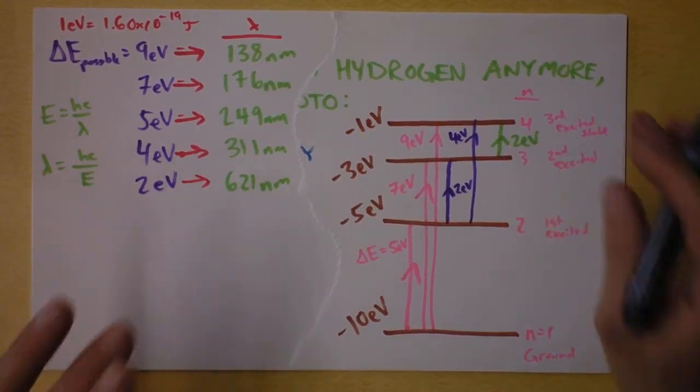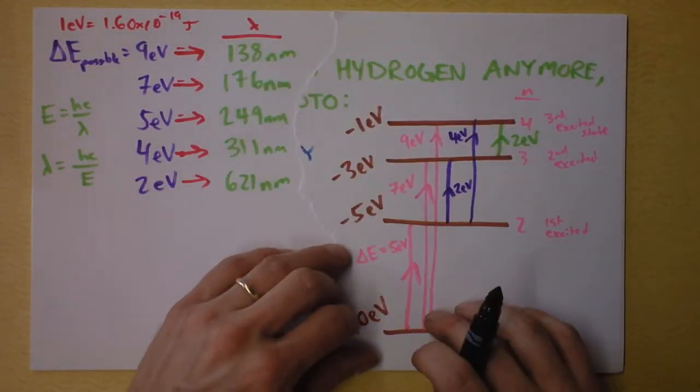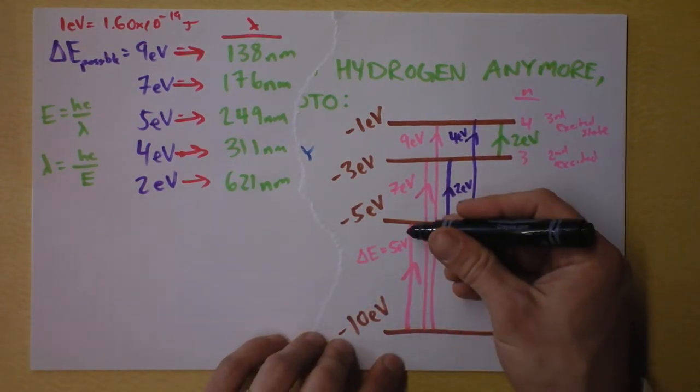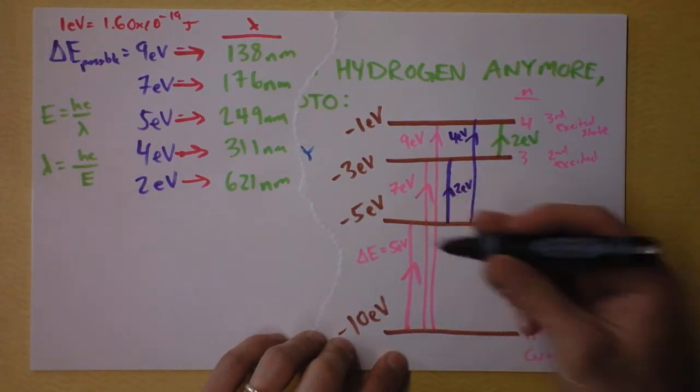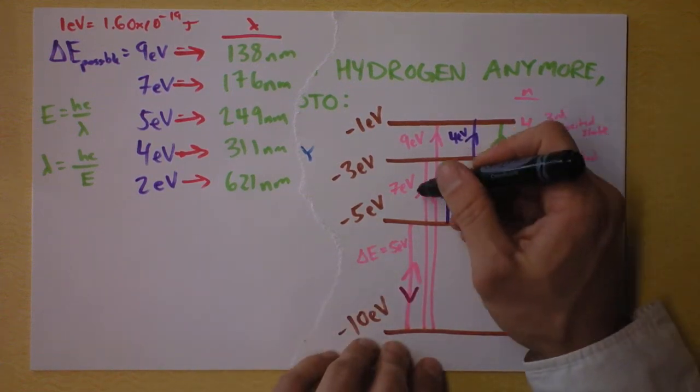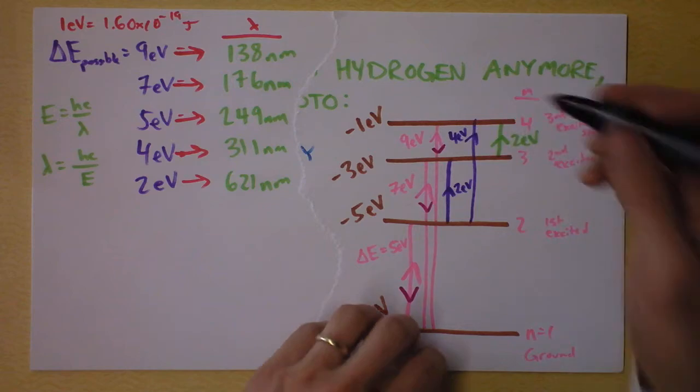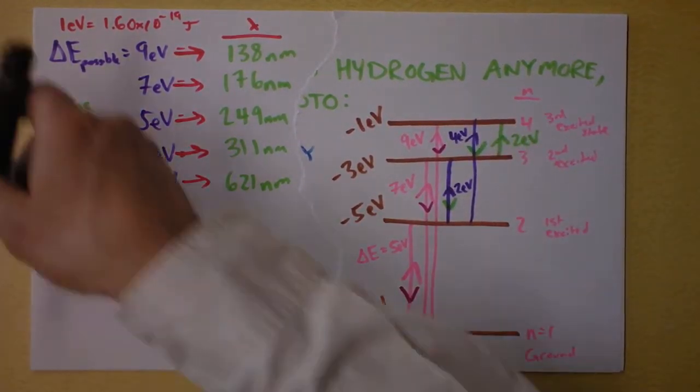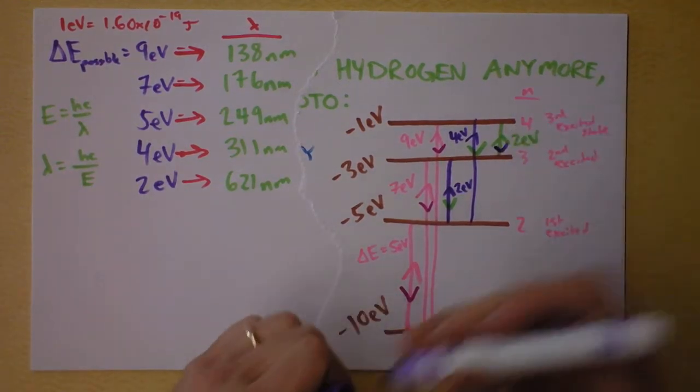Now we've talked about all the energies of photons that could be absorbed by this atom. I want you to consider this. Going up could also be reversed to be going down. That could happen. Same energy transition. Also, that going up could go that going down, and that going up could turn into that going down. This guy could go down here, and that guy could go down right there. And this guy could reverse also.